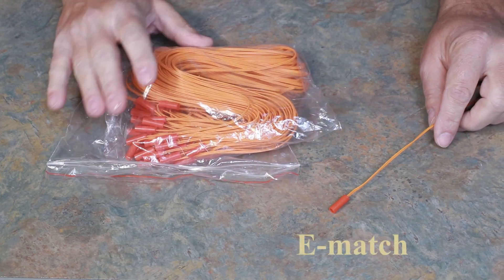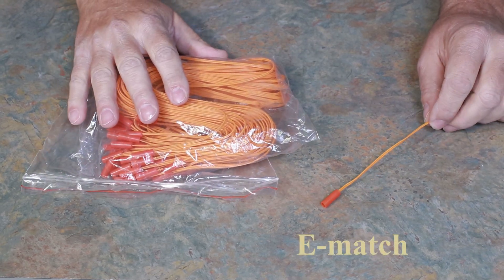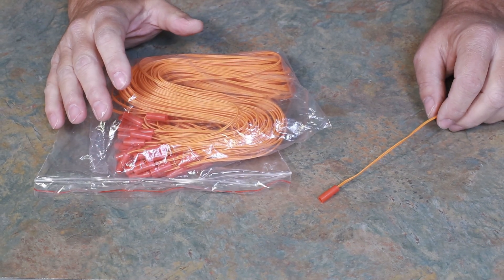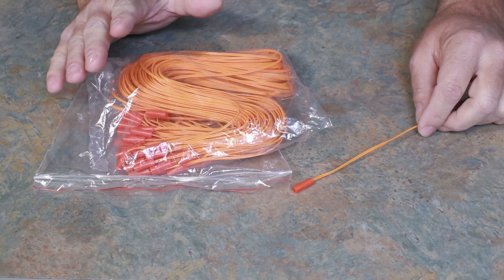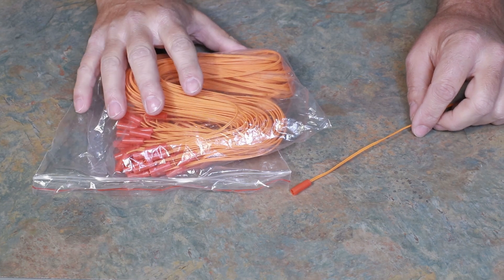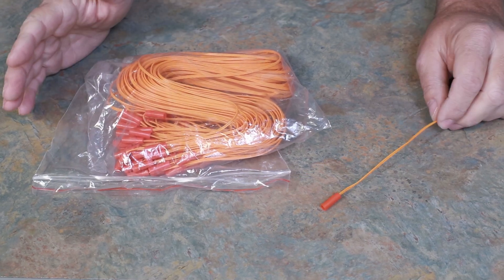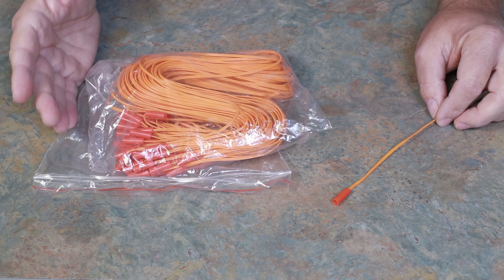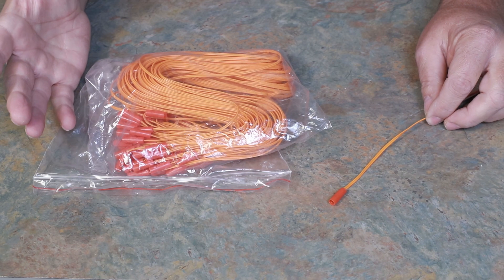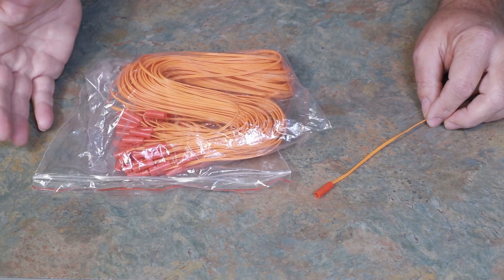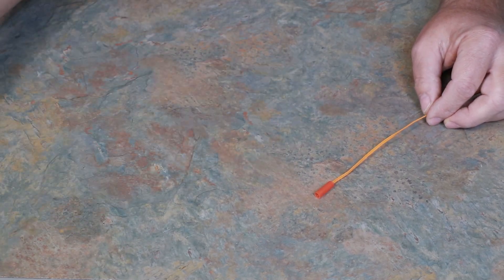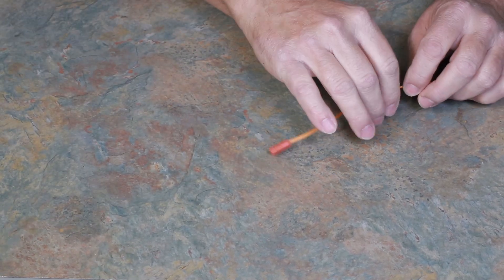For the igniter, I use an e-match. These are 19 1⁄2 inches long, or 50 centimeters. I use the shorter ones, which are 12 inches long or 30 centimeters for my dual deploy. But you want a long enough igniter to get it all the way up into the motor, and these will have plenty to spare. I order them off eBay. It takes two to three weeks to get them, so you have to plan ahead. I always order more than I need because you tend to use them up. This is an order of 100.